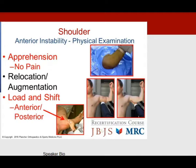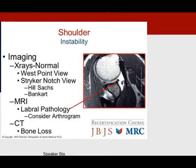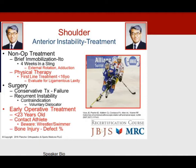Physical examination for anterior instability shows apprehension more than pain. Relocation, augmentation, and load-and-shift tests identify direction of instability — perform the load-and-shift in supine to stabilize the scapula. Anterior instability involves a stretched or torn anterior band of the inferior glenohumeral ligament. Subtle instability occurs in the cocking phase in professional throwers. X-rays may be normal; MRI detects labral pathology and CT scan detects bone loss.